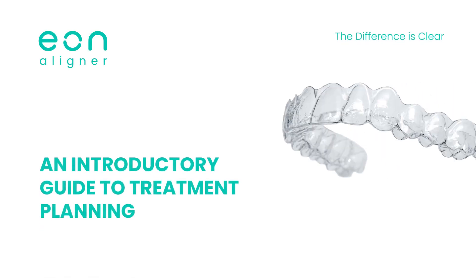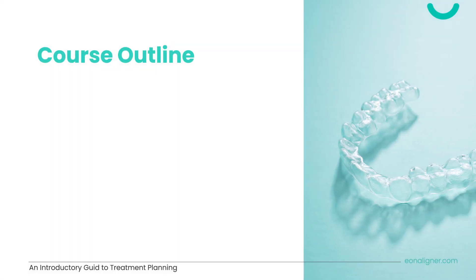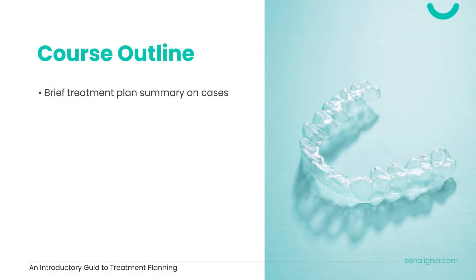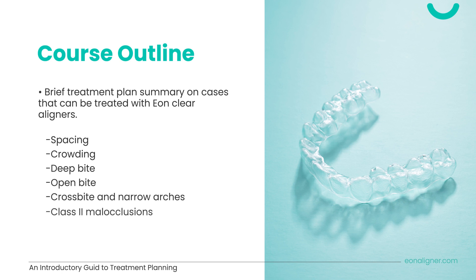An Introductory Guide to Treatment Planning. In this module, we'll be walking through some introductory guides to treatment planning with EON aligners. The course outline will include a brief discussion about the malocclusions that can be treated with EON clear aligner, which are spacing, crowding, deep bite, open bite, crossbite and narrow arches, class 2 malocclusions, and class 3 malocclusions.